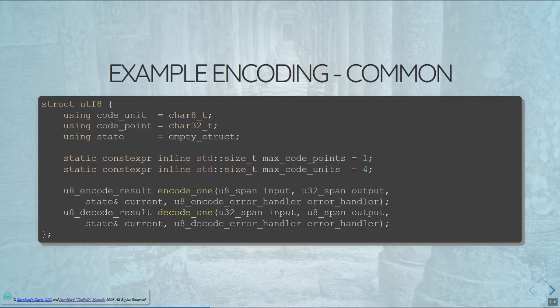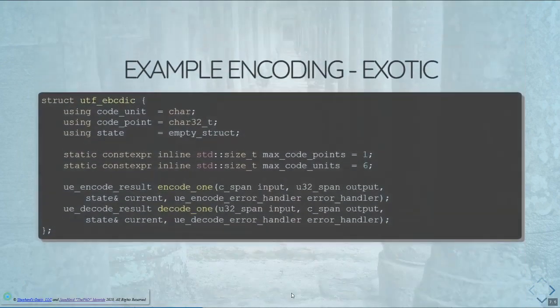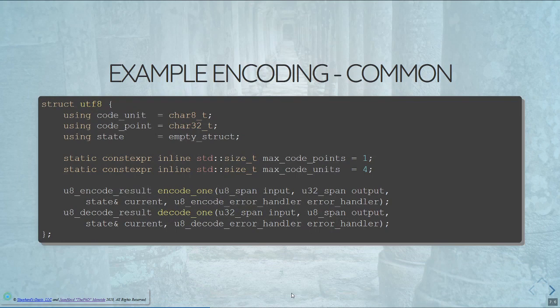Here's a more common encoding. For UTF-8 it's literally identical in almost every single way, except `max_code_units` is four, because a single code point can only be expanded to at most four code units. The reason we have `max_code_points` and `max_code_units` on both UTF-EBCDIC and UTF-8 is to know the maximum size of an output given any input for any operation. This is important for memory usage, as we'll see later.